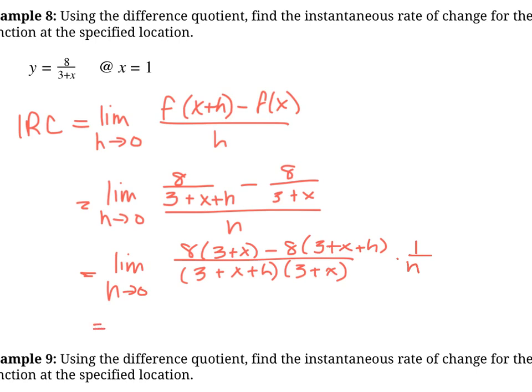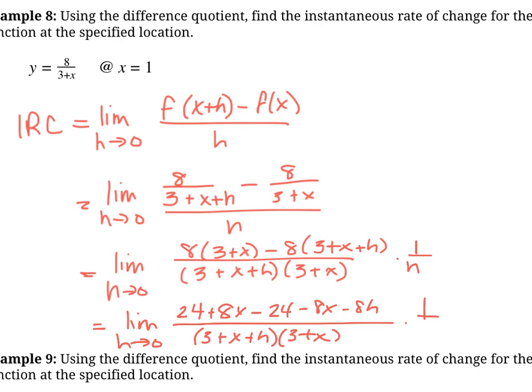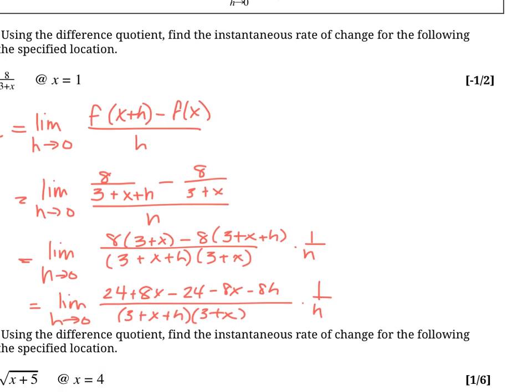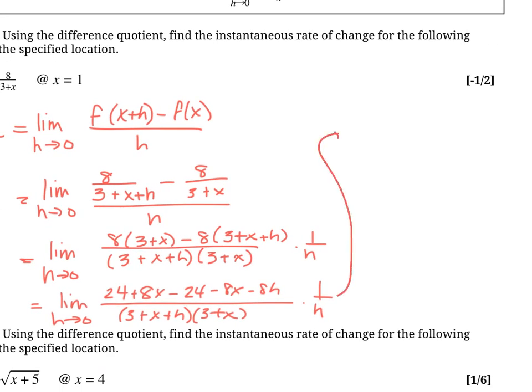Now let's simplify. The limit as h goes to 0. And we just basically got to simplify the top here. So 24 plus 8x minus 24 minus 8x minus 8h. And I'm not actually going to expand the bottom. Let's just leave it the way it is. 3 plus x plus h, 3 plus x. The reason for that is because the thing that's going to cancel out with the h is going to be in the numerator, right?